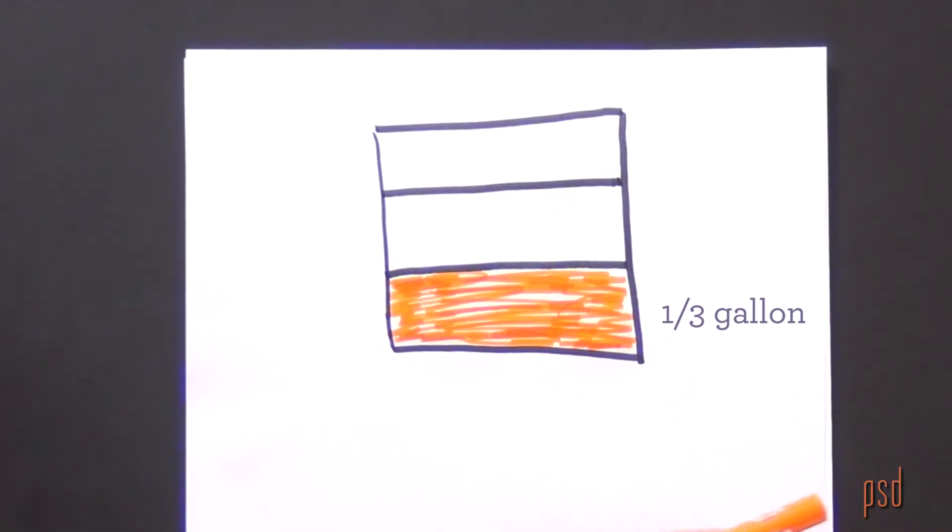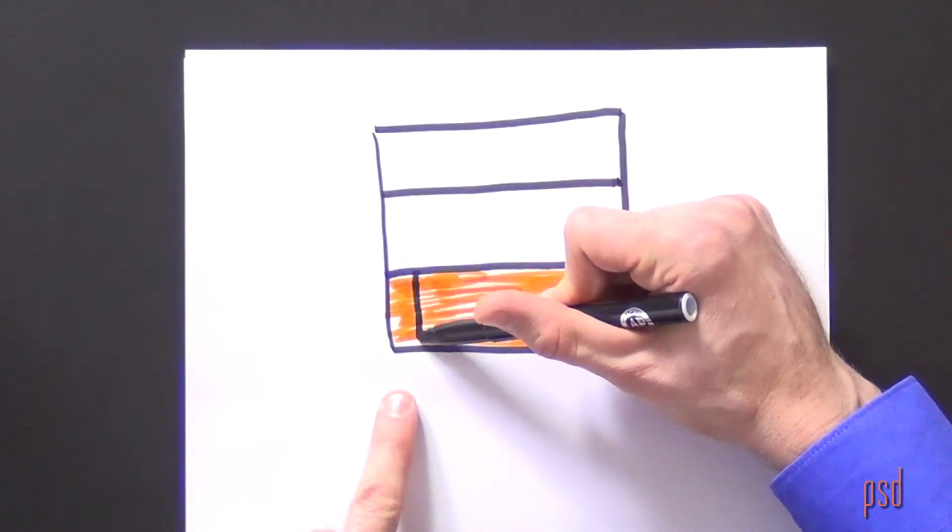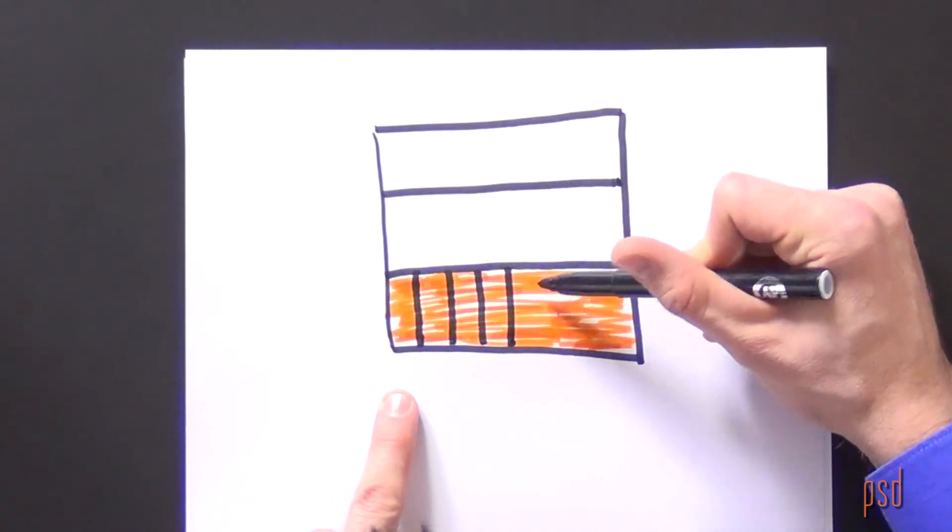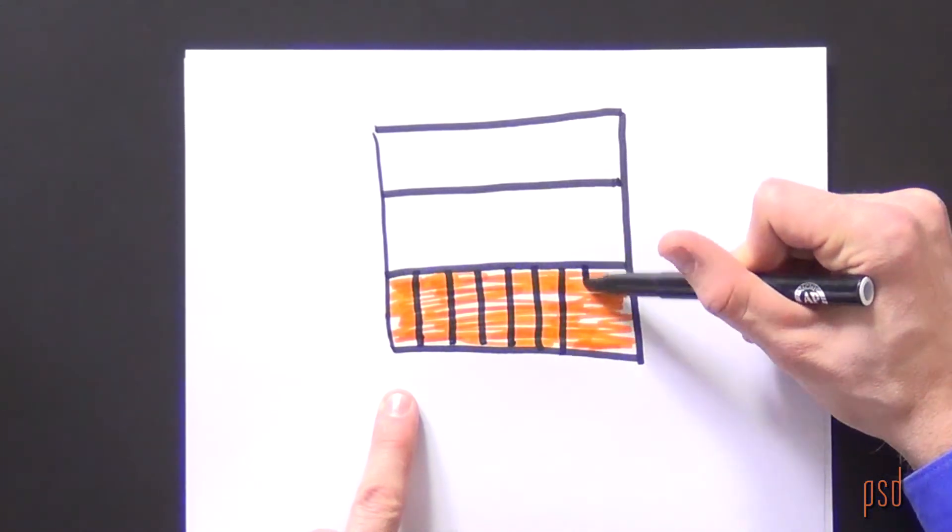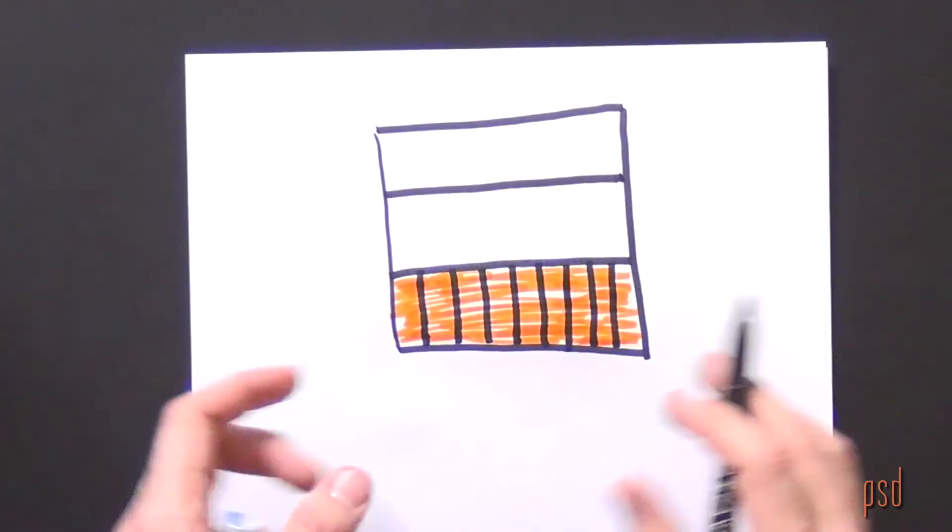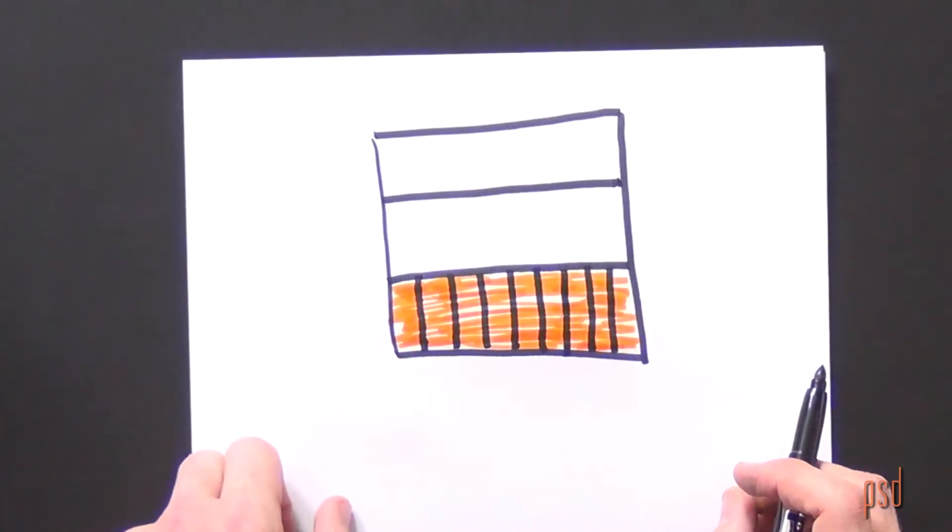We know that Mr. Rodriguez shared this one-third portion of a gallon of ice cream with nine students. So in my model, I want to divide the one-third section into nine parts. Those are nine equal parts. In my pictorial model, it's not exact, but it doesn't need to be exact with students.